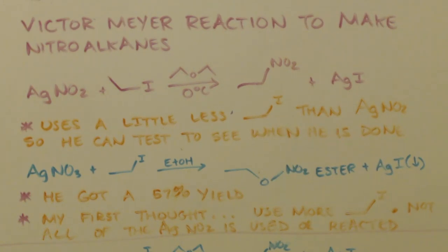You want it nice and cold, zero degrees C. He uses a little less ethyl iodide than silver nitrite stoichiometrically. The reason why he does that is so he can test when the reaction is done. If he puts more ethyl iodide than the nitrite, when he gets done, there's still going to be ethyl iodide in there, and he'll never know when he's done.